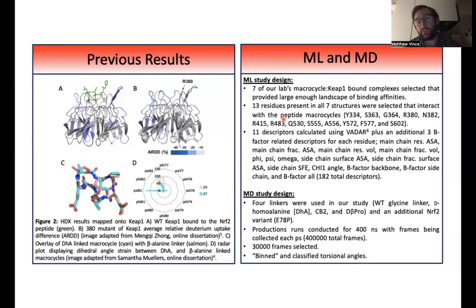Altogether, there's also 11 descriptors. These 11 descriptors were calculated using the VADAR website. These 11 descriptors pertain to volume, shape, surface area, and angles of the KEEP-1 protein residues in the binding site. I was also able to obtain three extra descriptors relating to B factors that I incorporated. So altogether, there's 182 total descriptors in my study.